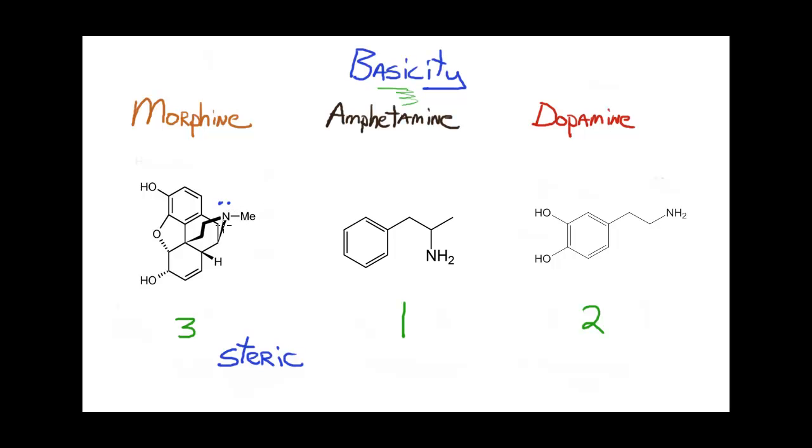In other words, if I have a lot of large bulky R groups around that amine nitrogen, like I do in morphine, which is a tertiary amine, meaning there's no hydrogens, just R groups attached to it, that means that the probability of that nitrogen being protonated is lowered because the access to that nitrogen is hindered by the presence of these large groups.